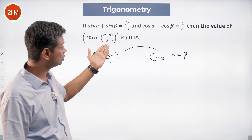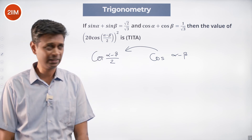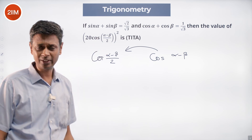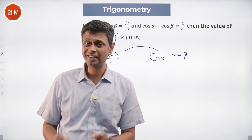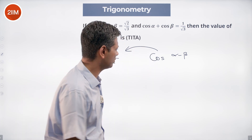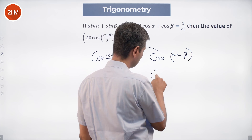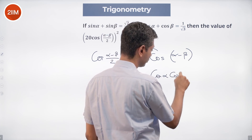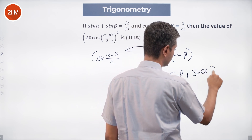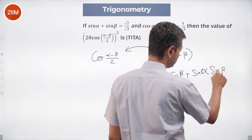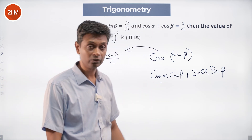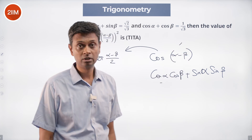We need to find cos((α-β)/2) whole square, which is 20·cos((α-β)/2) whole square. Or we need to find cos((α-β)/2), which is linked to cos(α-β). What is cos(α-β)? It is cosα·cosβ + sinα·sinβ. So if we have a mechanism to arrive at that, then we can go and attack this.